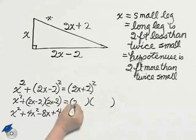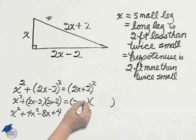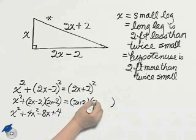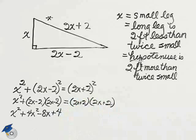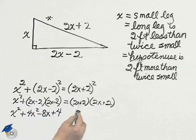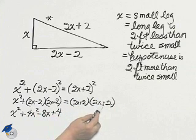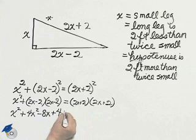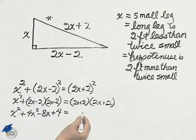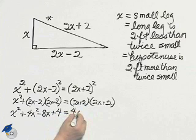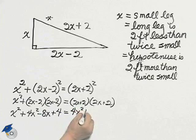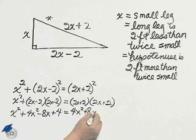A negative times a negative for the last term gives plus four. Doing the same thing on the right side, I have (2x plus 2)(2x plus 2). The only difference is the plus signs. As I FOIL it out, I get four x squared plus eight x plus four.